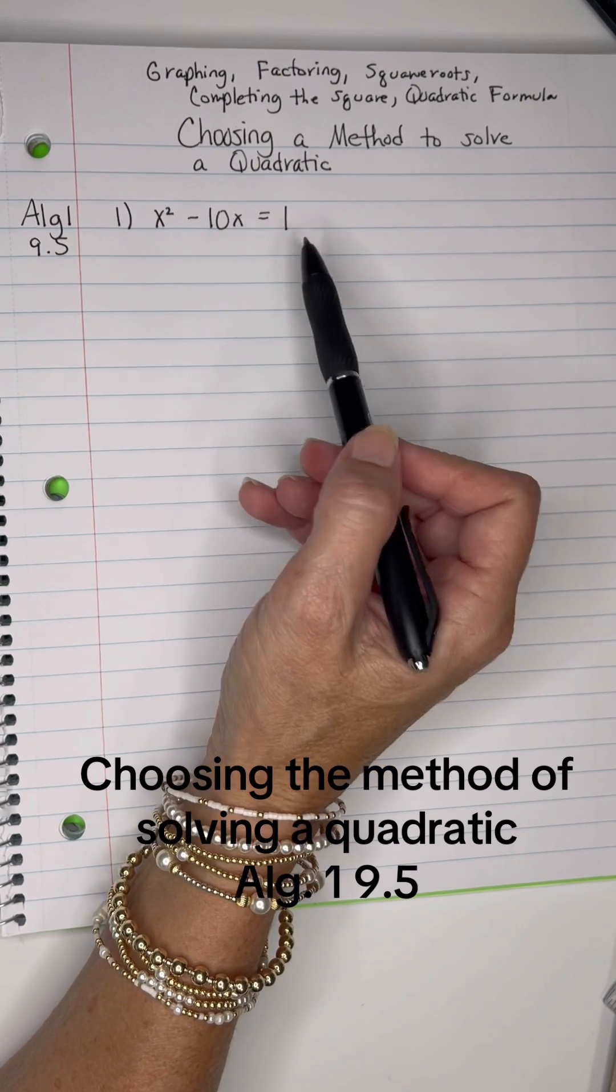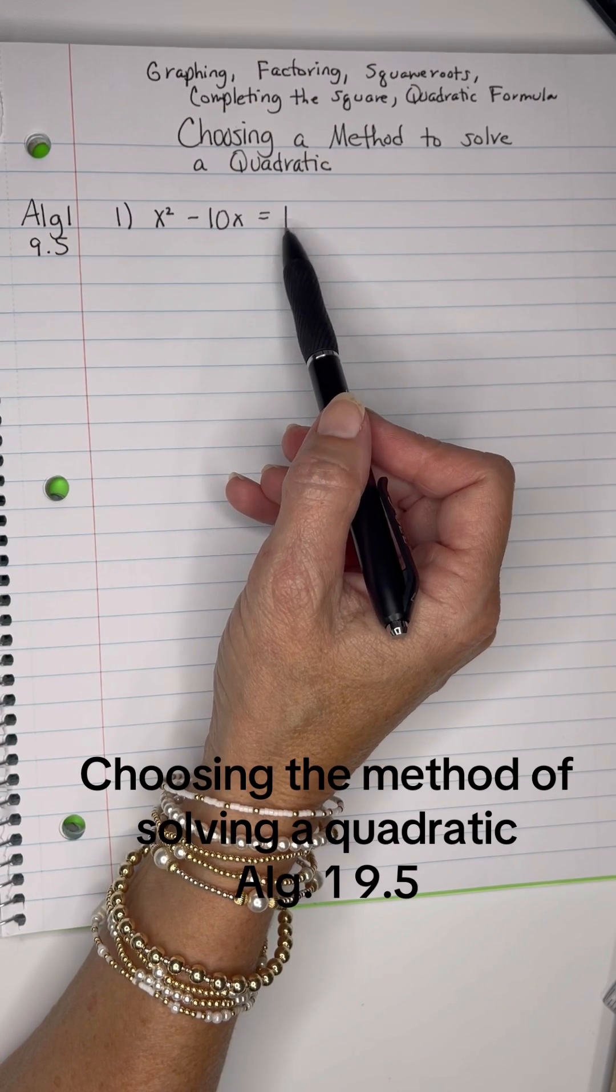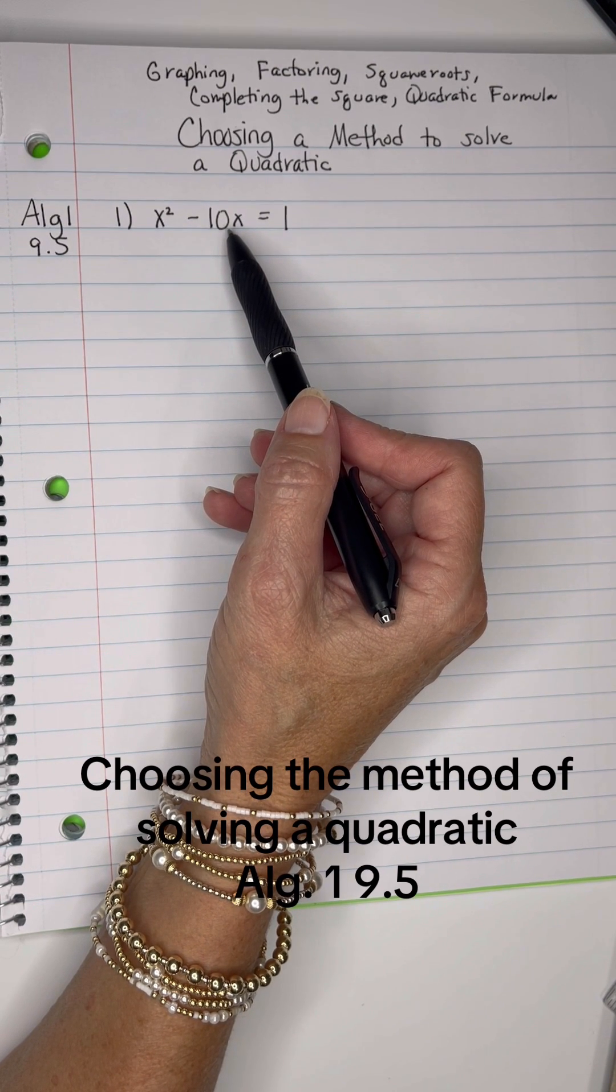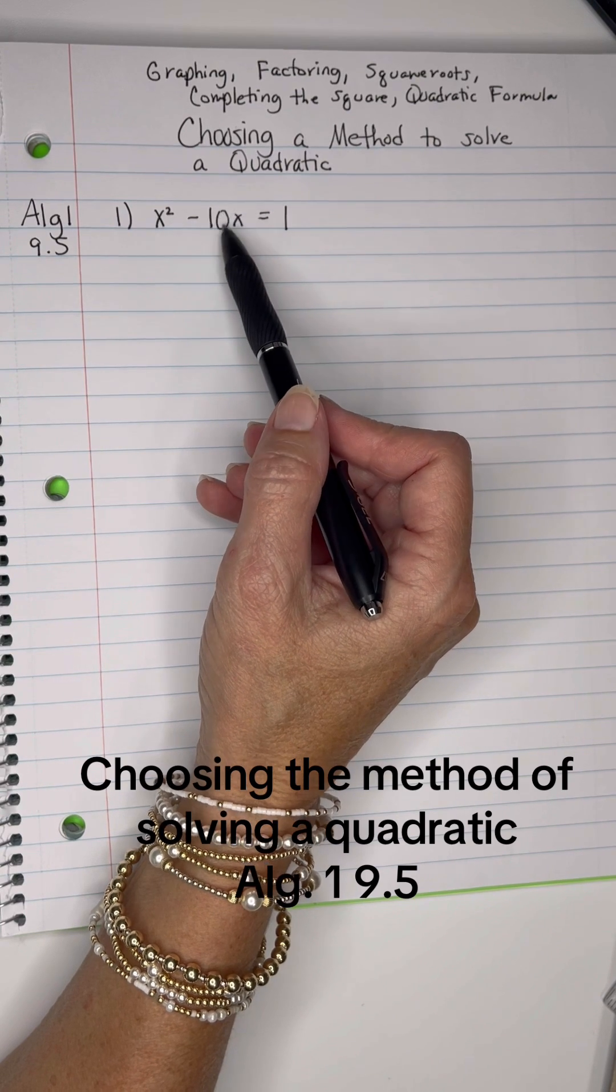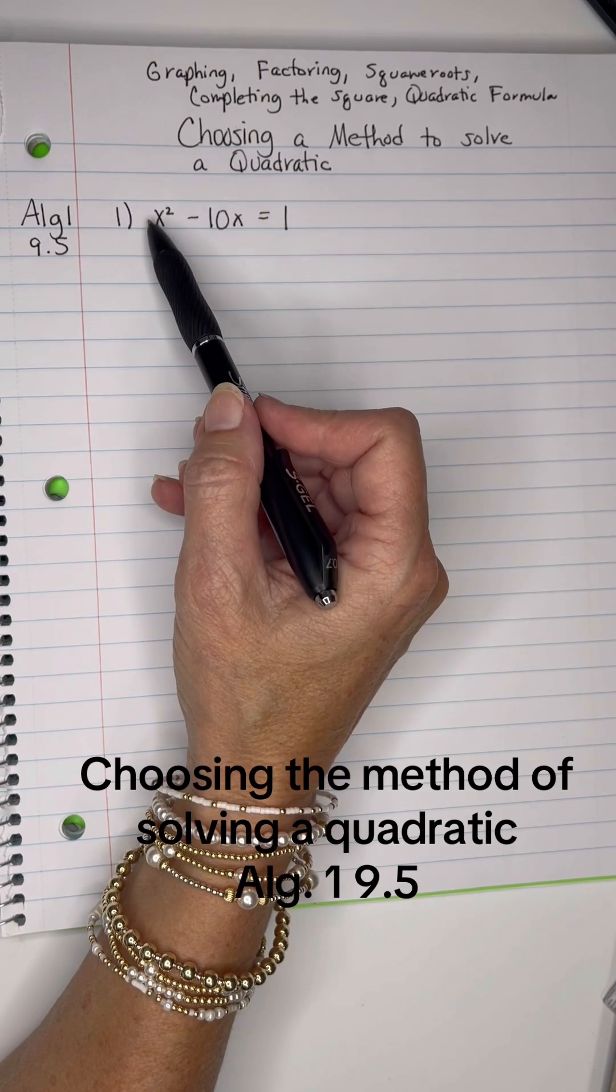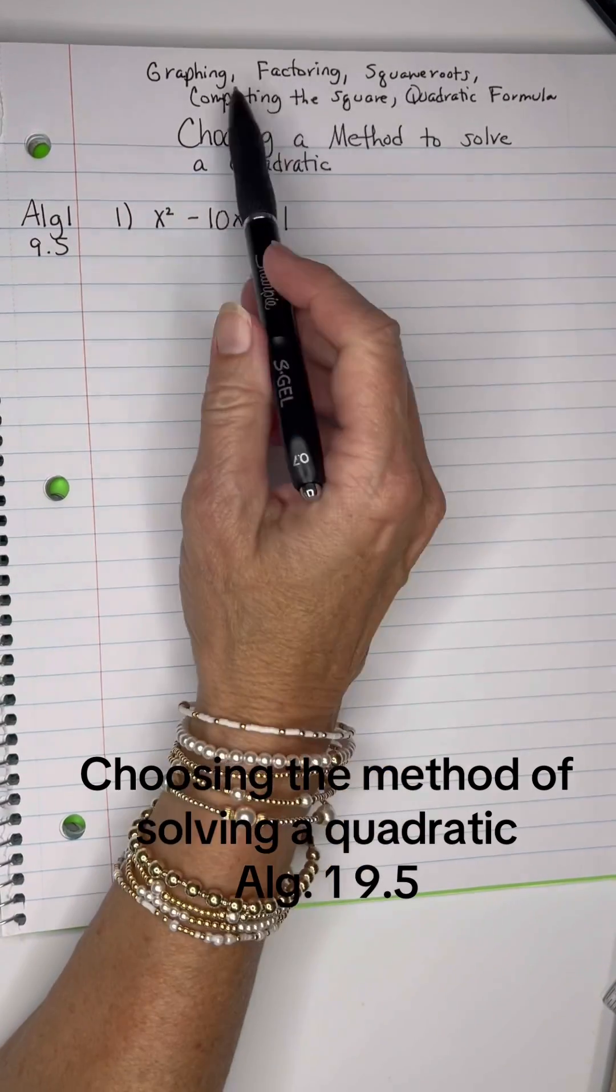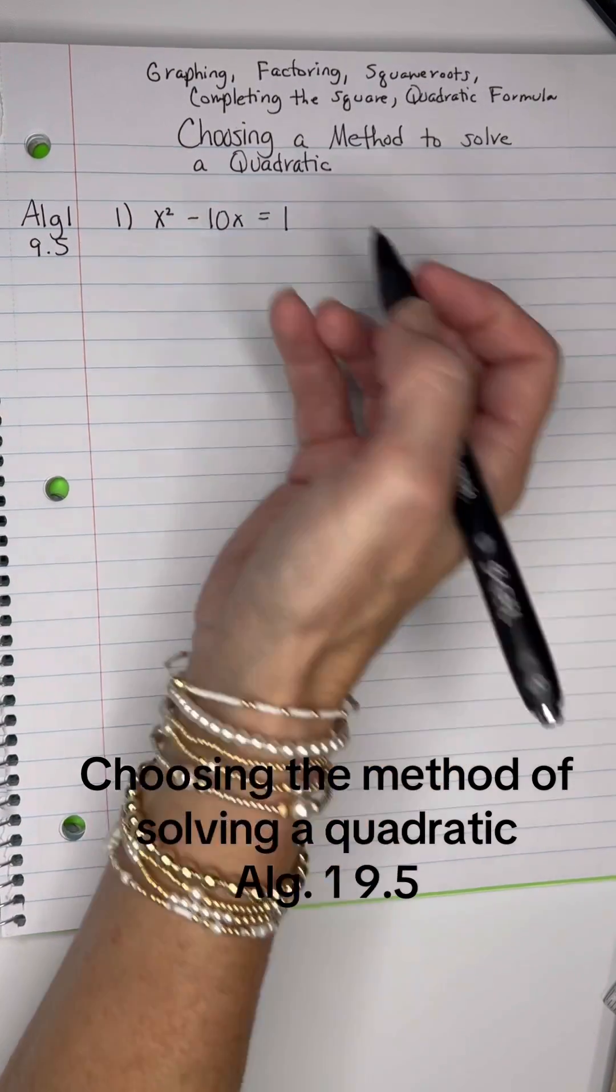But if I move that 1 over to the other side of this equation, I know the factors of 1 are 1 and 1, and that cannot make a 10, so factoring would not be a good method. I'm thinking since 10 is even and this A is 1, completing the square might be a really good method to work this. So let's complete the square.